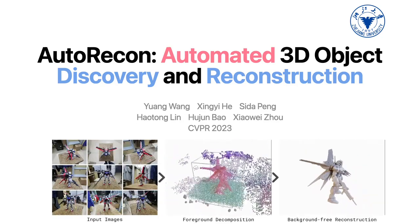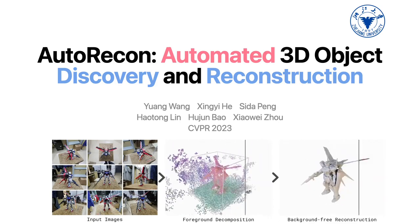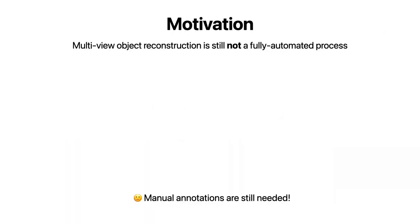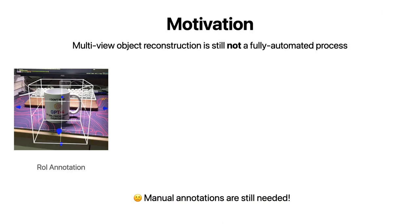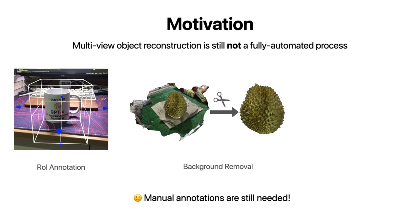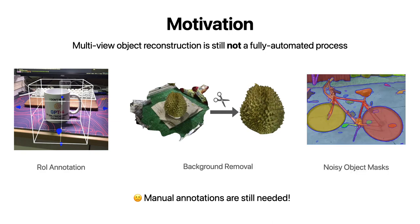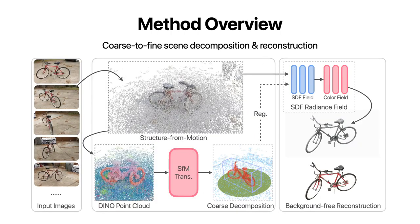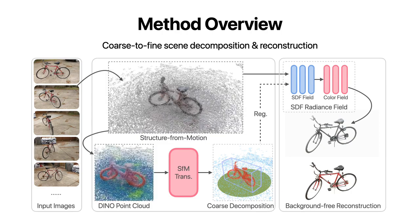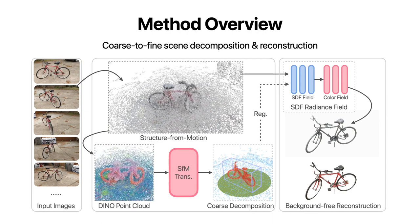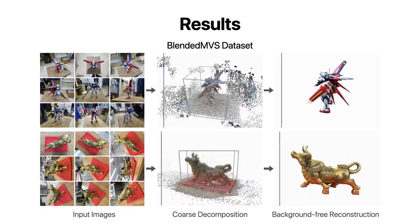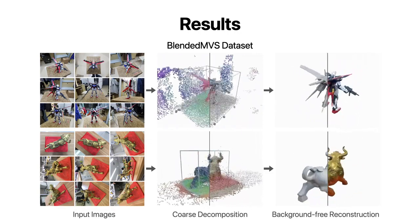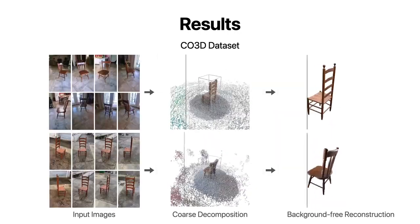We propose AutoRecon, a fully automated pipeline for 3D object discovery and reconstruction. AutoRecon achieves background-free object reconstruction without manual annotation. Current object reconstruction methods are still not fully automated — users need to manually annotate the region of interest and perform background removal after reconstruction. Moreover, existing object segmentation techniques still produce noisy object masks. We propose a coarse-to-fine framework where the foreground object is first localized and decomposed from the structure-from-motion point cloud, then reconstructed as a background-free object model with decomposed neural scene representations.